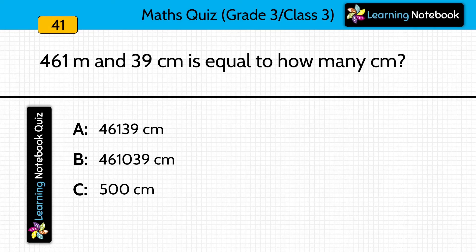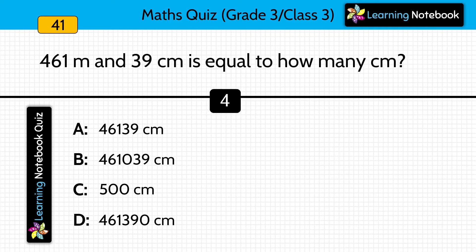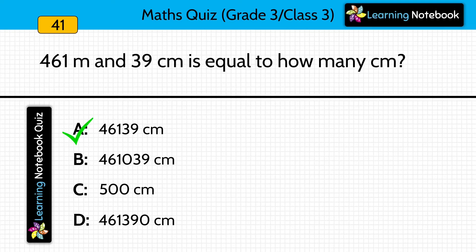461 meters and 39 centimeters equals how many centimeters? Answer is option A, 46,139 centimeters. Because 1 meter equals 100 centimeters, so 461 meters equals 46,100 centimeters. Add 39 centimeters to get 46,139 centimeters.